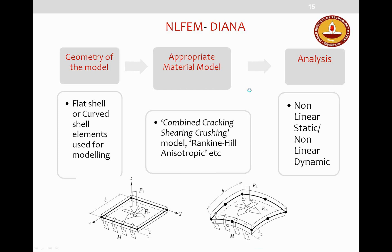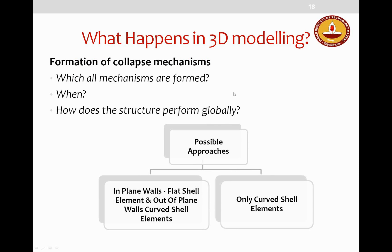In 3D modeling, the interest is in identifying collapse mechanisms—which mechanisms form, at what stage, and how the structure performs globally. Two approaches are possible: in-plane walls modeled using flat shell elements with the out-of-plane facade wall modeled using curved shell elements, or modeling the whole structure using curved shell elements only. Both strategies were adopted in this work.